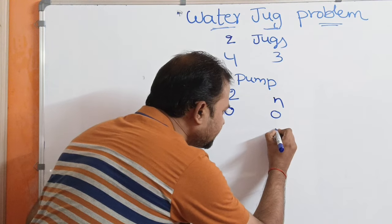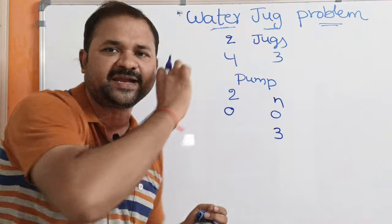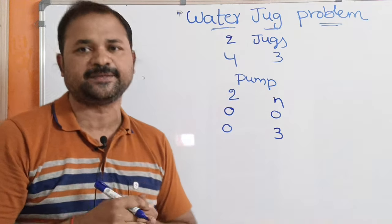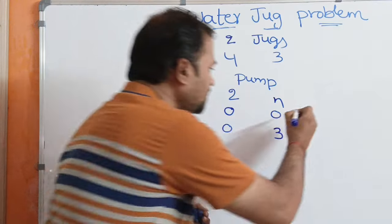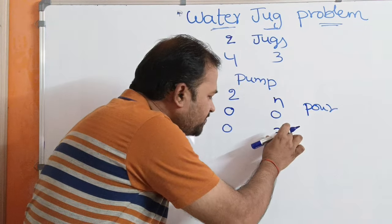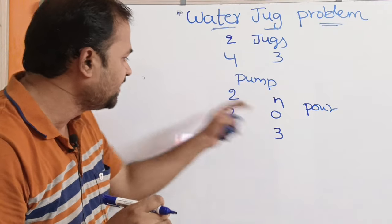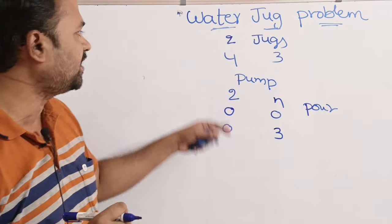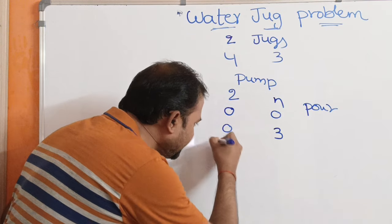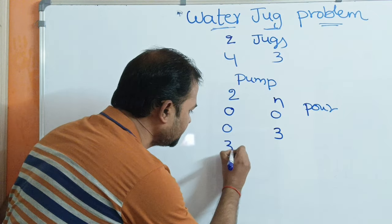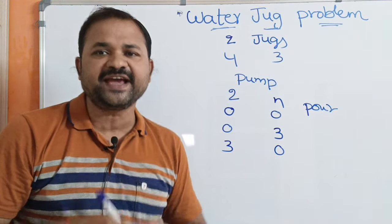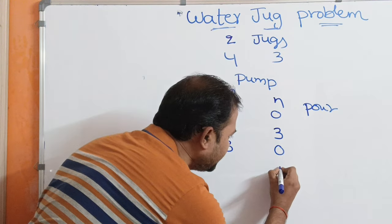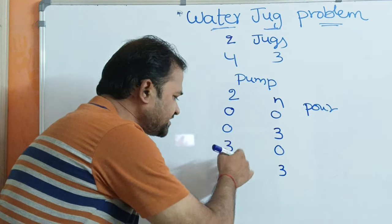First, we need to completely fill the 3-liter water jug, so the state becomes (0, 3). Next, we pour the water from the 3-liter jug into the 4-liter jug, placing all 3 liters into the 4-liter jug, giving state (3, 0). Then again we completely fill the 3-liter jug, so it becomes 3 again — previously it had 3, so now it returns to 3.